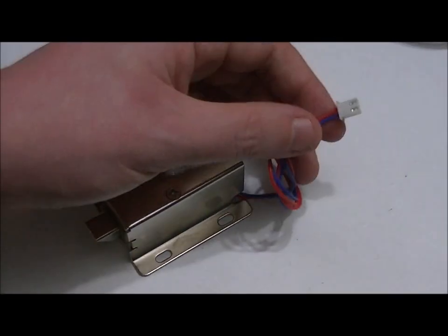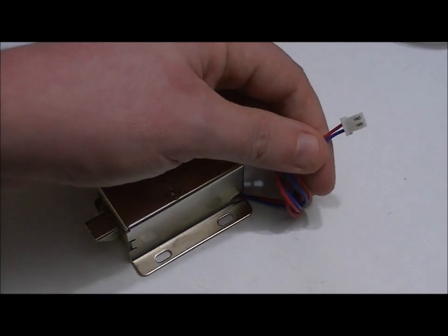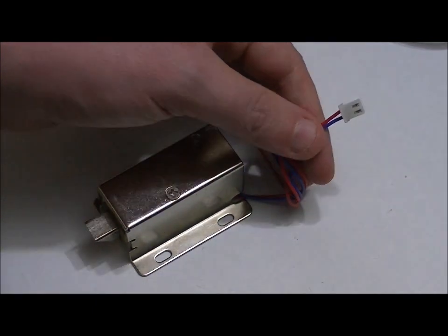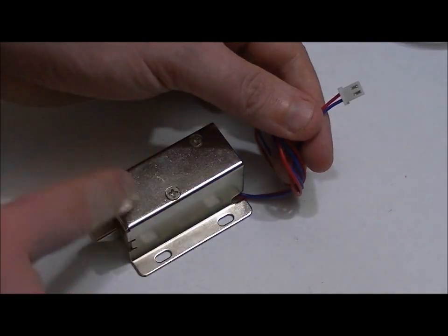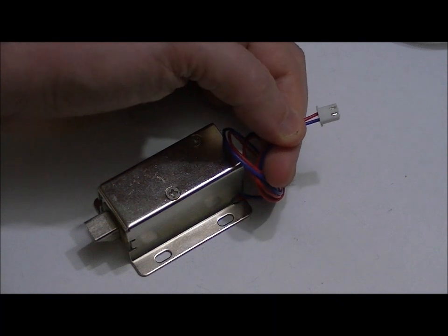Now what you'll notice right here is there's a red and blue wire. Polarity doesn't matter. You can apply 12 volts and ground to either side, and what will happen is power will flow through the coil and back through to DC ground. You can use a high power transistor or a relay to drive this.